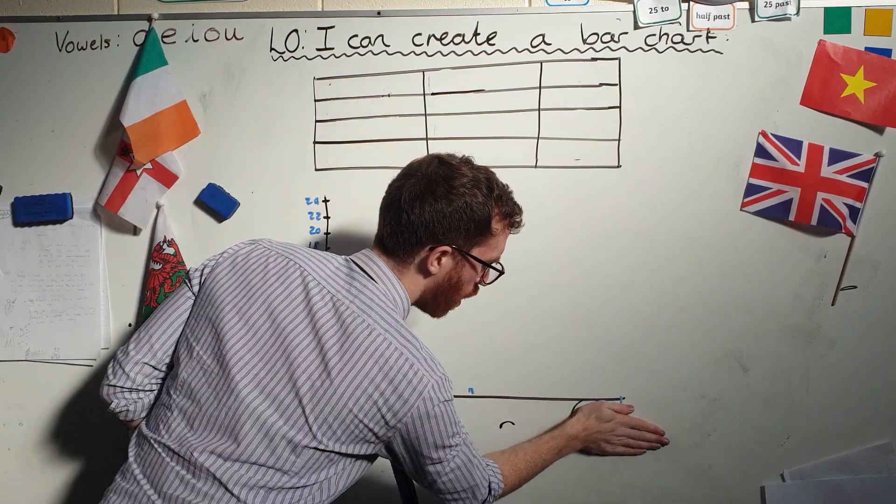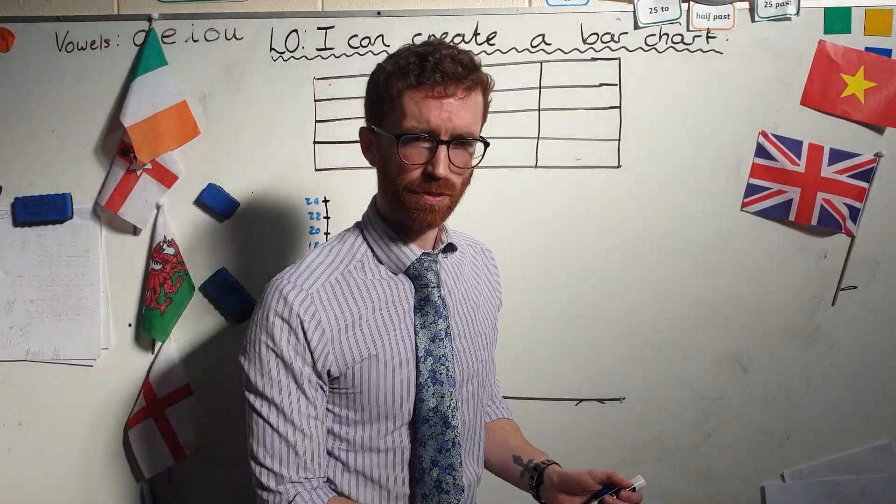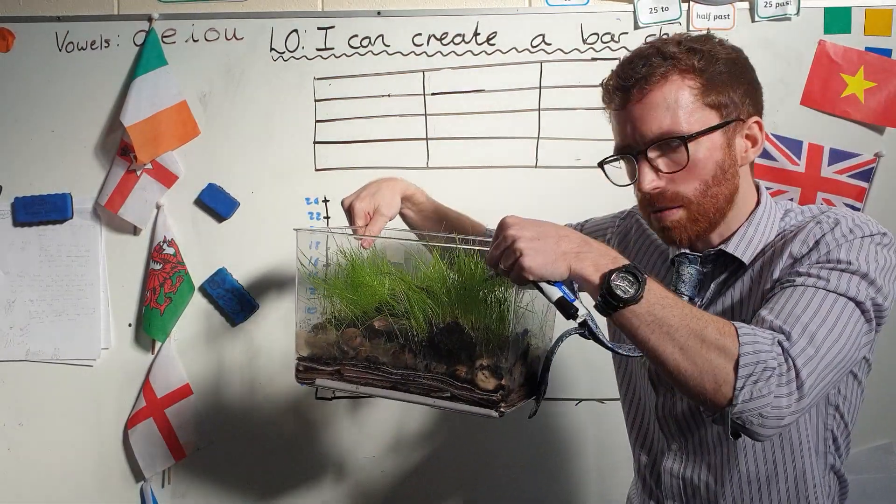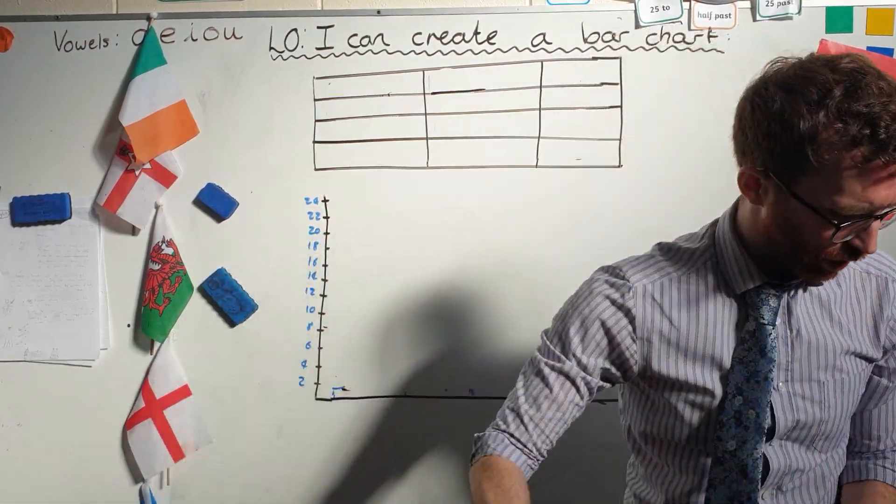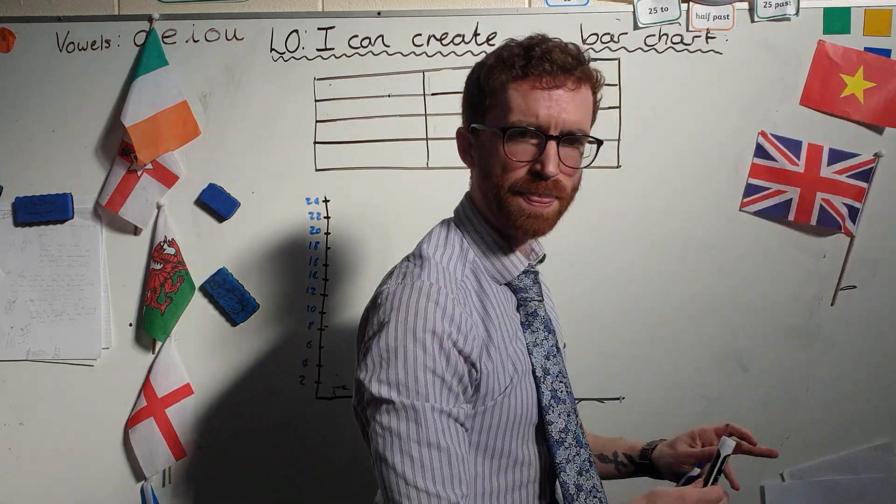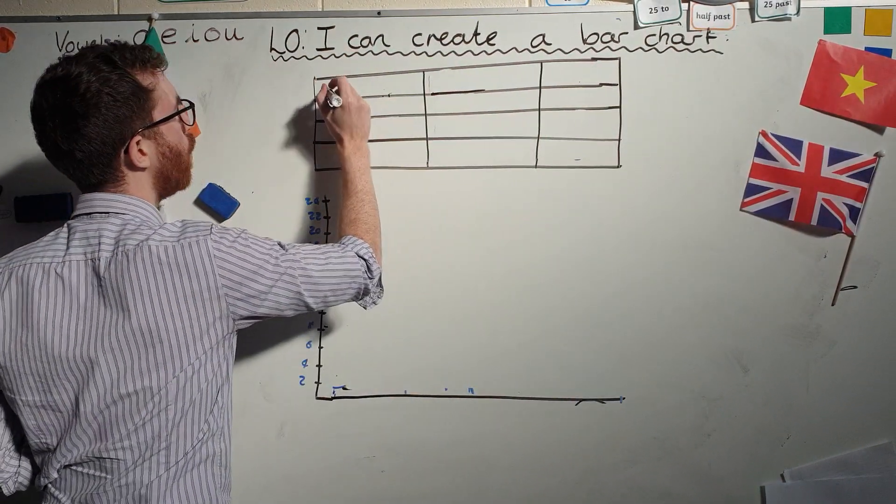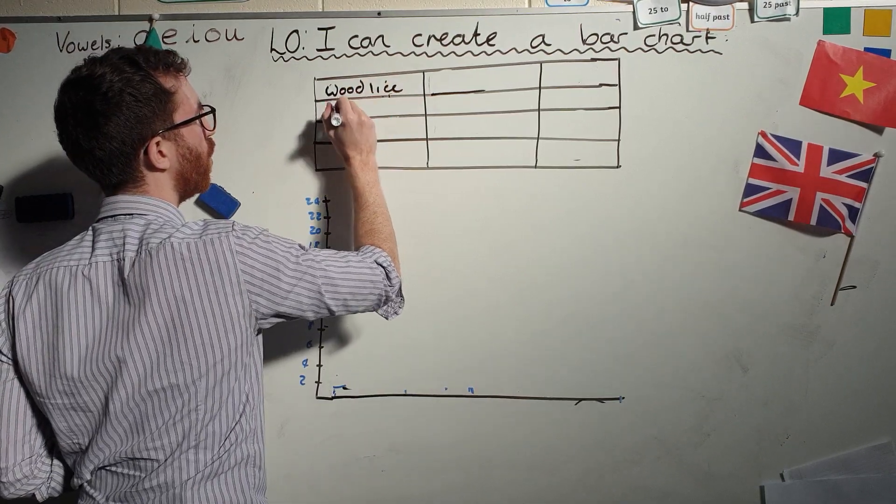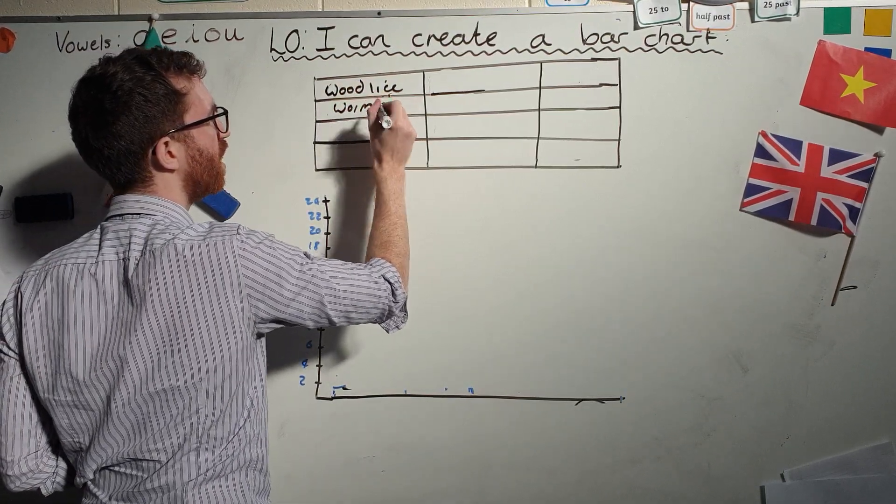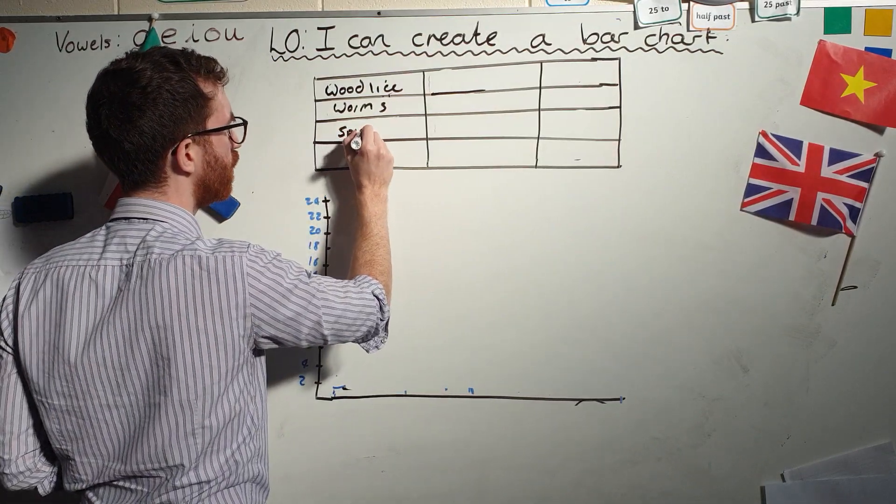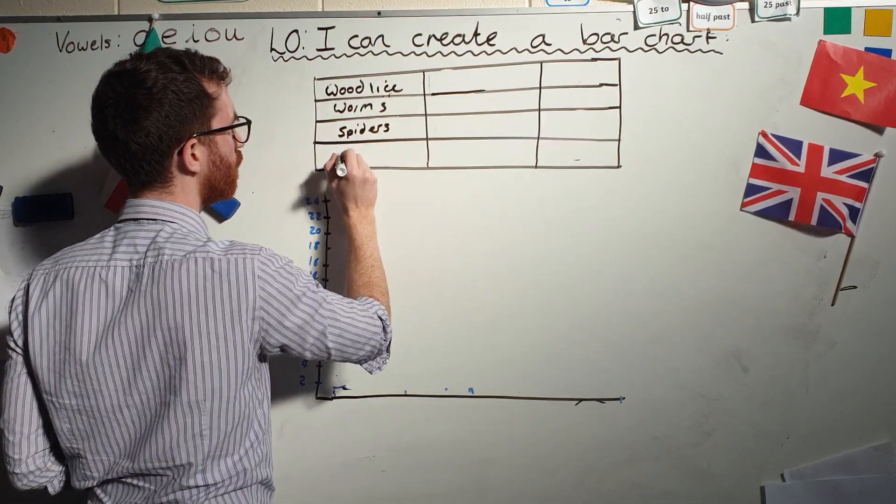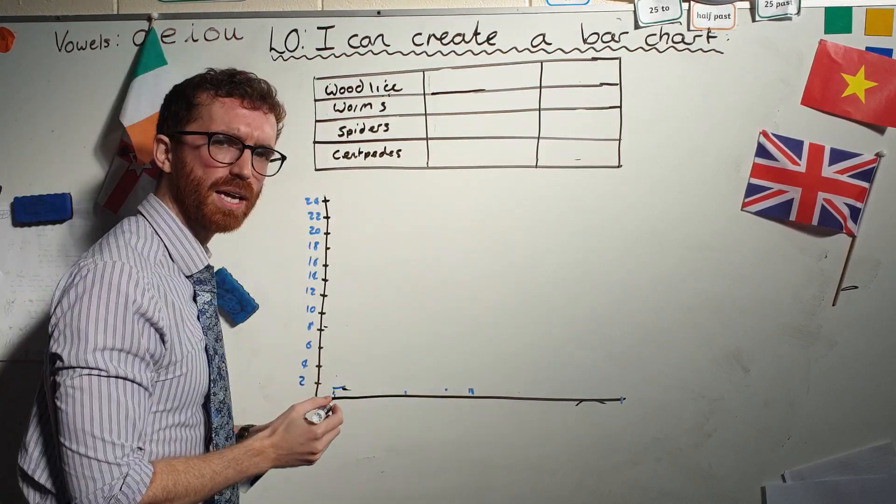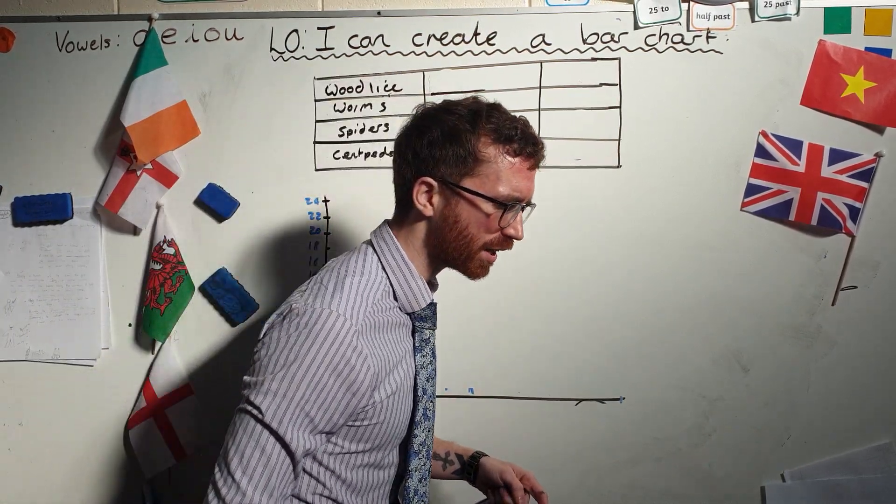So this is what I am going to do for my bar chart. I want to find out about mini beasts in my secret mini beast world. And I've been counting them actually. I'm going to count them now. I'm going to look for wood lice, I'm going to look for worms, I'm going to look for spiders, I'm going to look for centipedes. So off I go. I'm going to start counting.